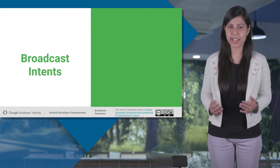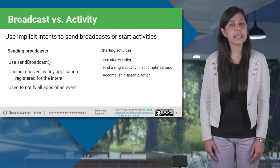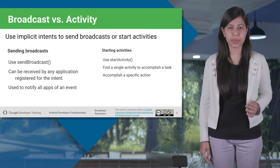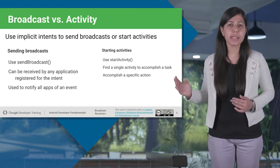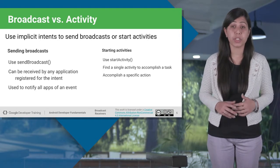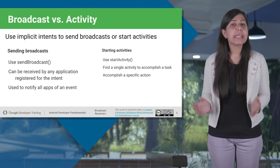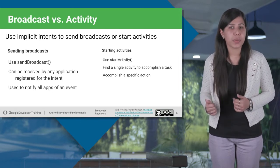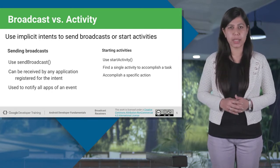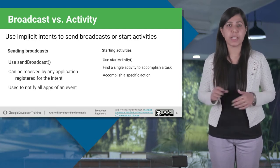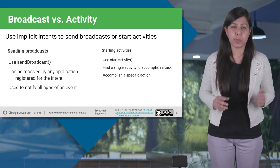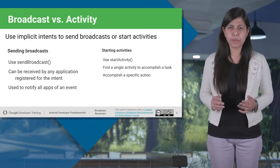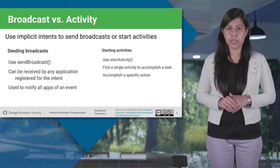Broadcast intents are intent objects that are broadcast. Intents facilitate communication between two components. So in addition to providing a mechanism for launching application activities, intents are also used as a way to broadcast system-wide messages to other components on the system. Broadcast intents in this mechanism are completely separate from the intents used to start activities, which is a foreground operation showing what the user is currently interacting with and sent via startActivity — it will only affect one activity to accomplish the specific task. Whereas a broadcast intent is a background operation that the user is normally not aware of and is sent via sendBroadcast, and by default can affect multiple applications which are registered for receiving the intent.